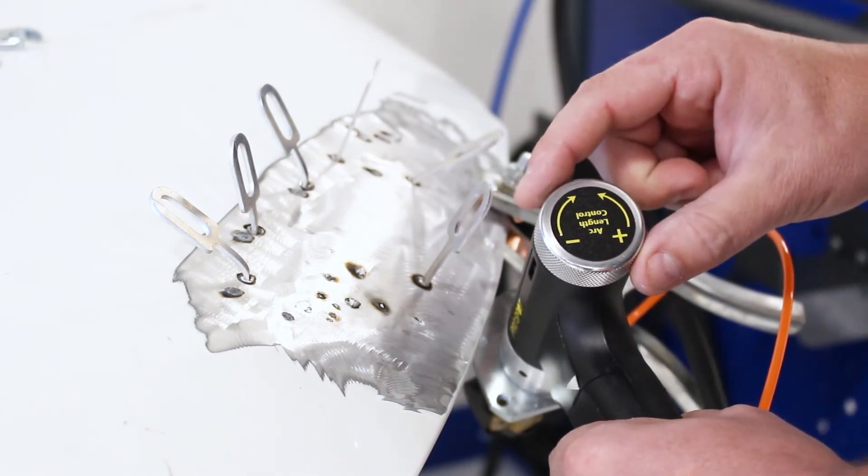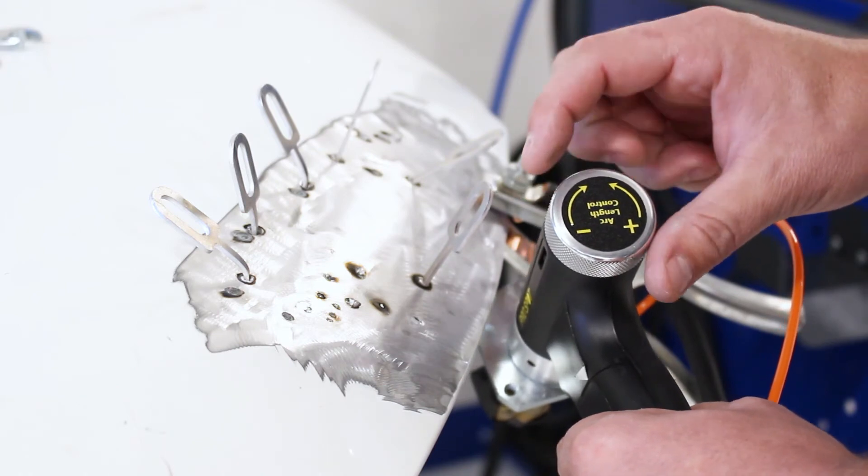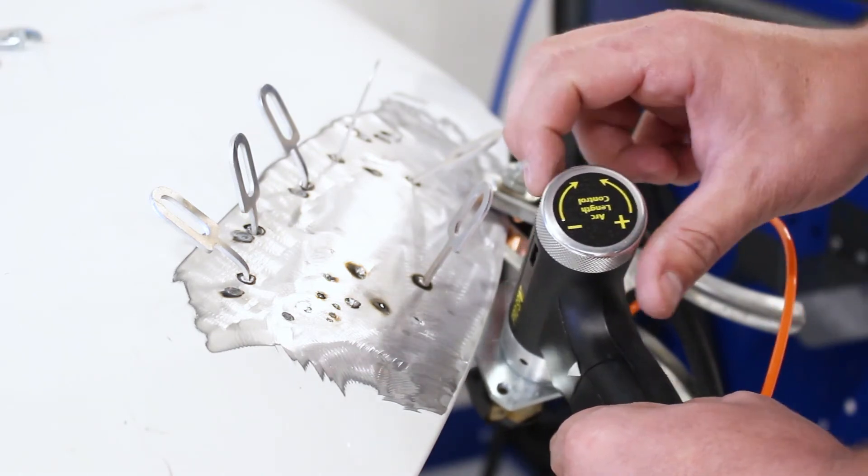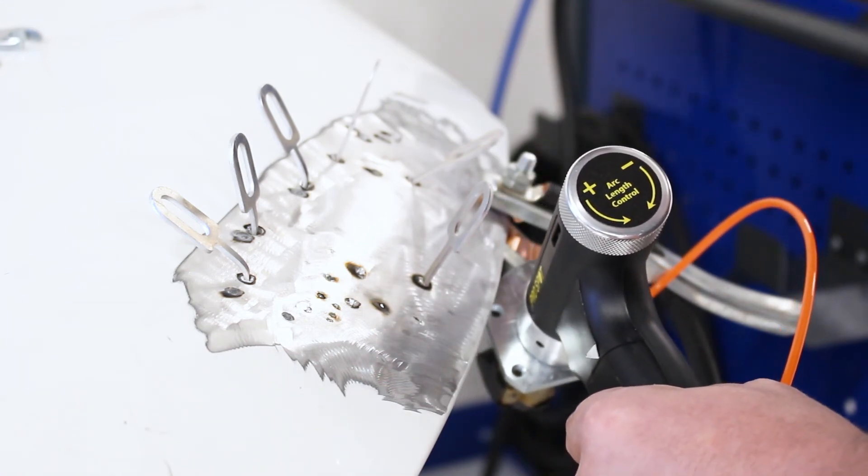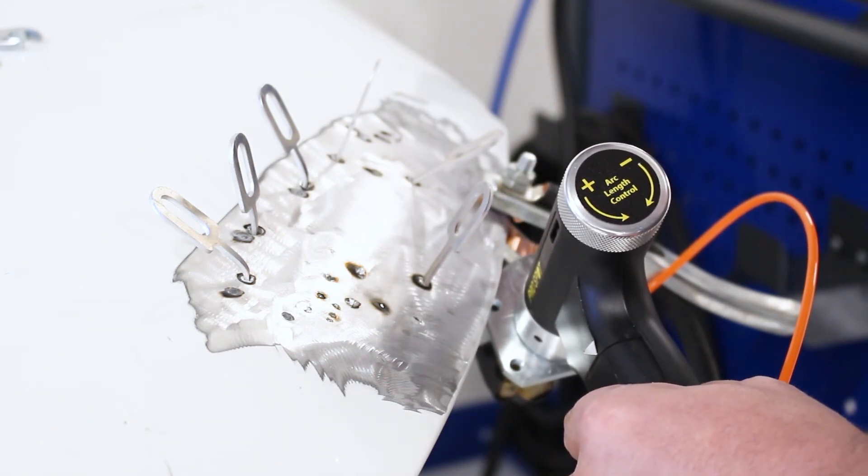Or we might want to double check the knob on the back of the gun. If you're on the low end of it, we might want to tighten that up and give it a longer arc length to give it more penetration into the panel.